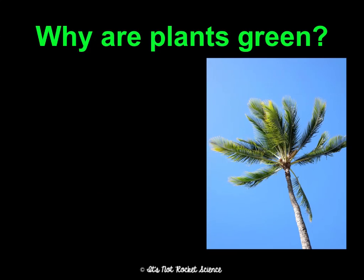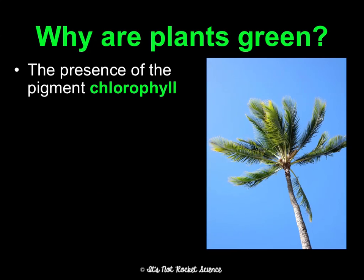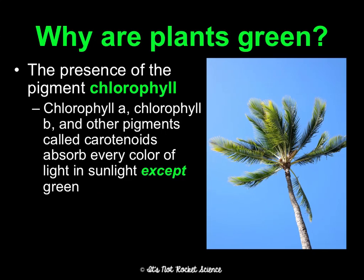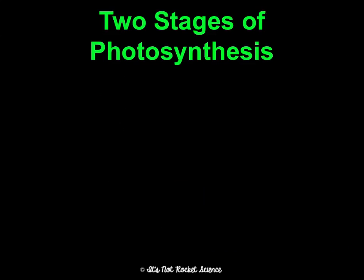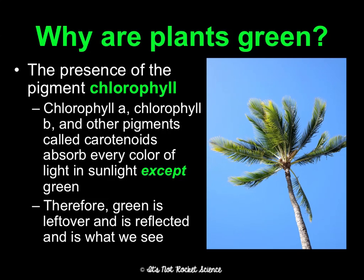Why are plants green? Plants are green because of the presence of a pigment called chlorophyll. Chlorophyll A, chlorophyll B, and some other pigments called carotenoids absorb every color of light in sunlight except green. Whatever's not absorbed gets reflected, so green is what's being reflected — and that's what we see. Chlorophyll is really important because it's the pigment that allows plants to absorb sunlight. Because we don't have chlorophyll, we cannot do photosynthesis, which is why we're consumers and not producers.